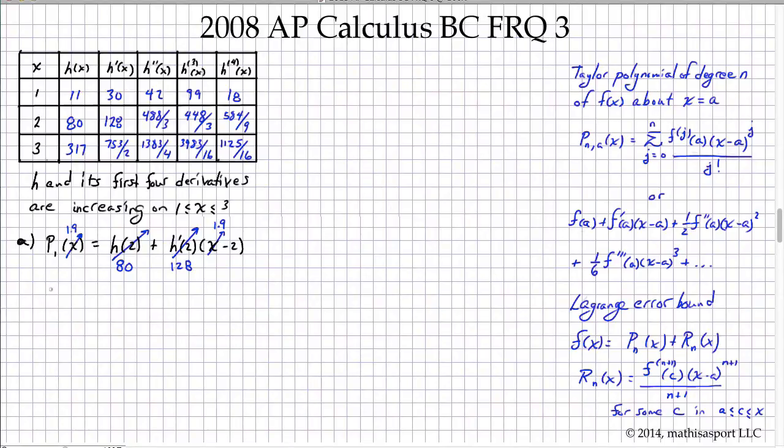And so we have the P1 of 1.9 is just going to be 80. Now 1.9 minus 2 is negative 0.1 so that's 80 minus 12.8, which equals 67.2.